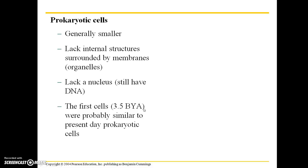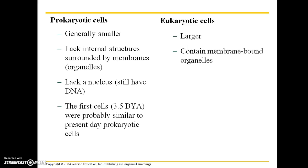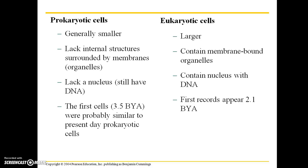Prokaryotic cells were probably similar to present-day prokaryotic cells. In contrast, eukaryotic cells are larger, they contain membrane-bound organelles, and they contain a nucleus with DNA. The first records of eukaryotic cells appear about 2.1 billion years ago.